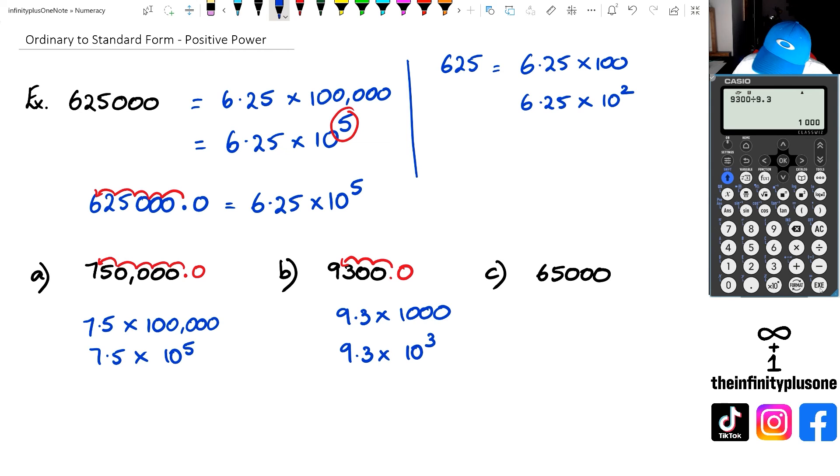Looking at the next one: 65,000. We're going to get 6.5 times 10,000. If you're not sure, just take 65,000 and divide it by 6.5. There we go, we get 10,000. We're going to put this as 6.5 times 10 to the power of - count the number of zeros, that's 4. So to the power of 4. Again, we're moving 1, 2, 3, 4 decimal places. So we get 6.5 times 10 to the power of 4.